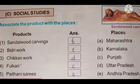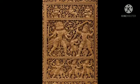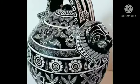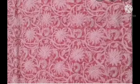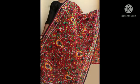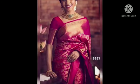C. Social Studies. 8. Associate the products with the place. Here are various products and where they come from. Sandalwood carvings are from Karnataka. Bidri work is from Andhra Pradesh. Chikan work is from Uttar Pradesh. Phulkari is from Punjab. Paithani sarees are from Maharashtra.